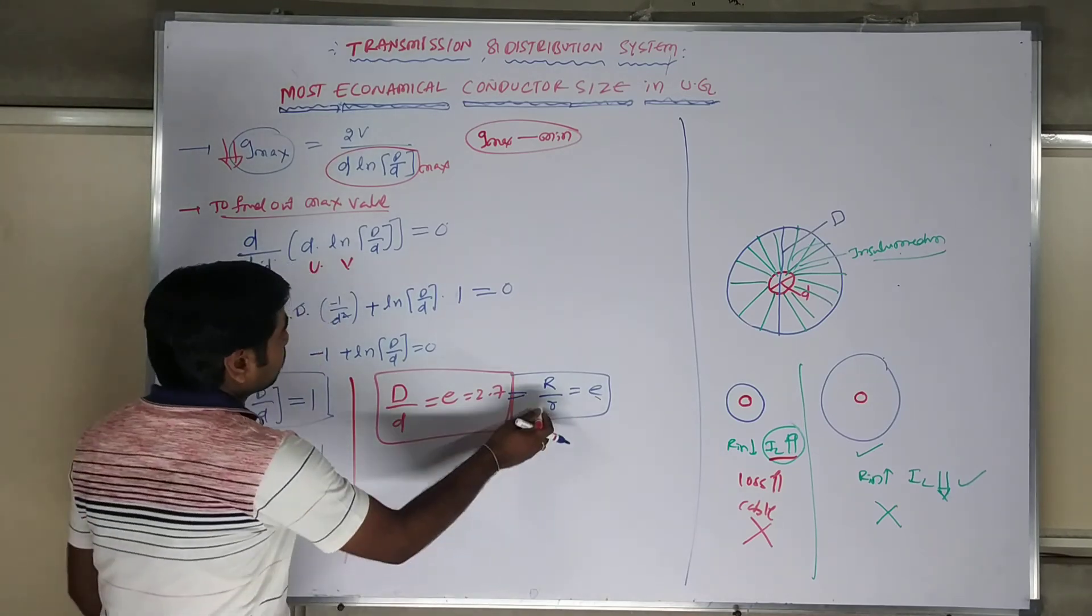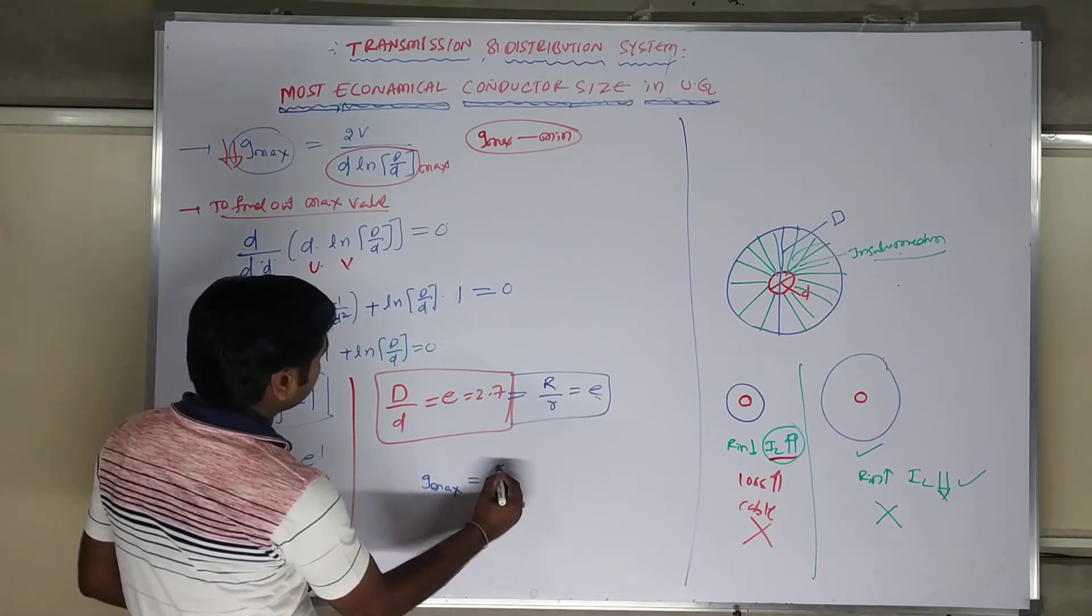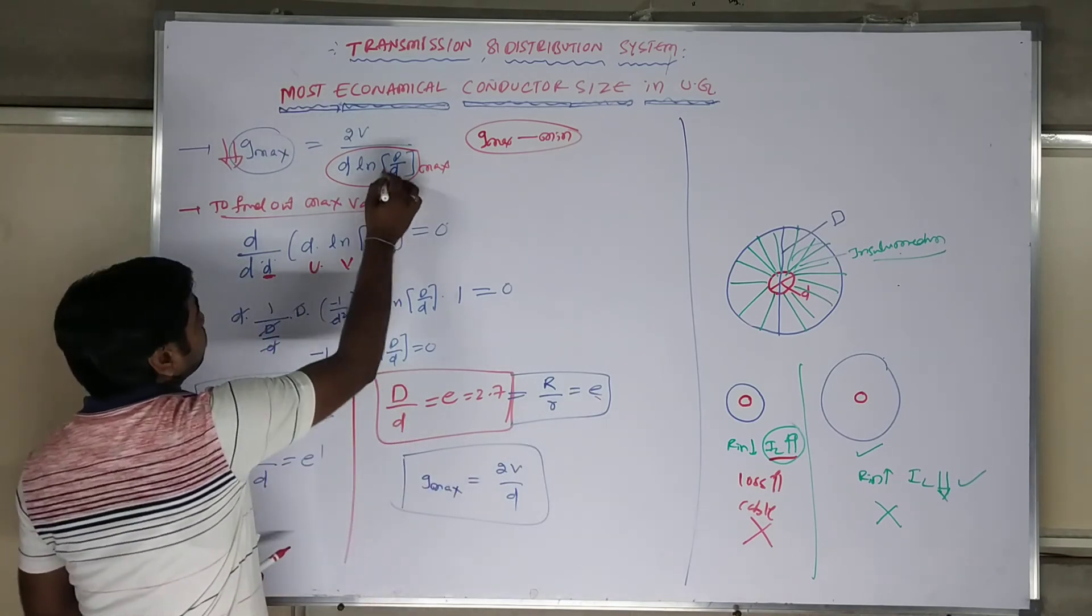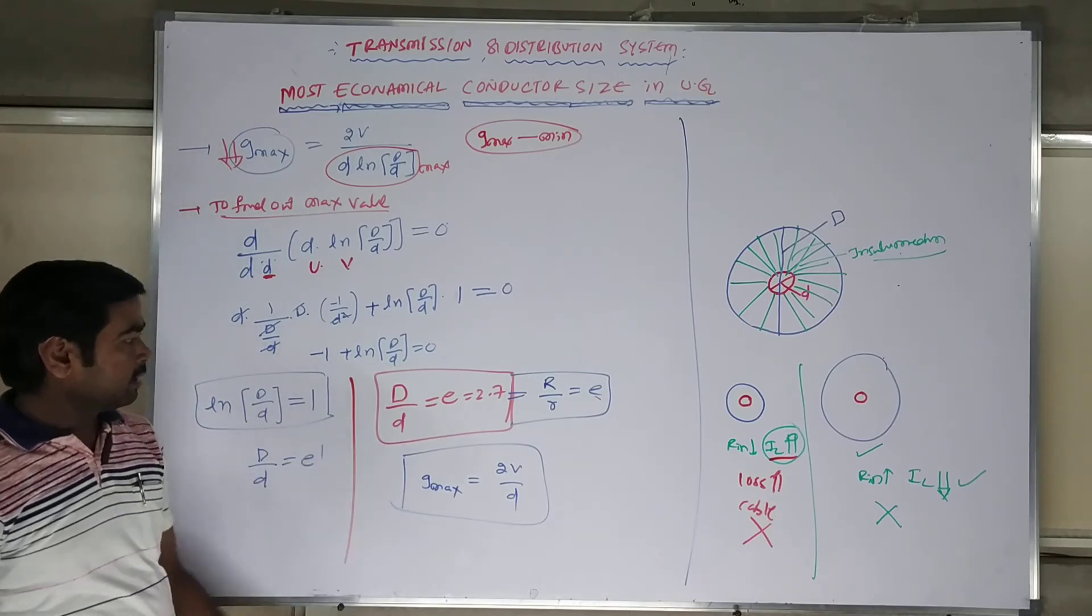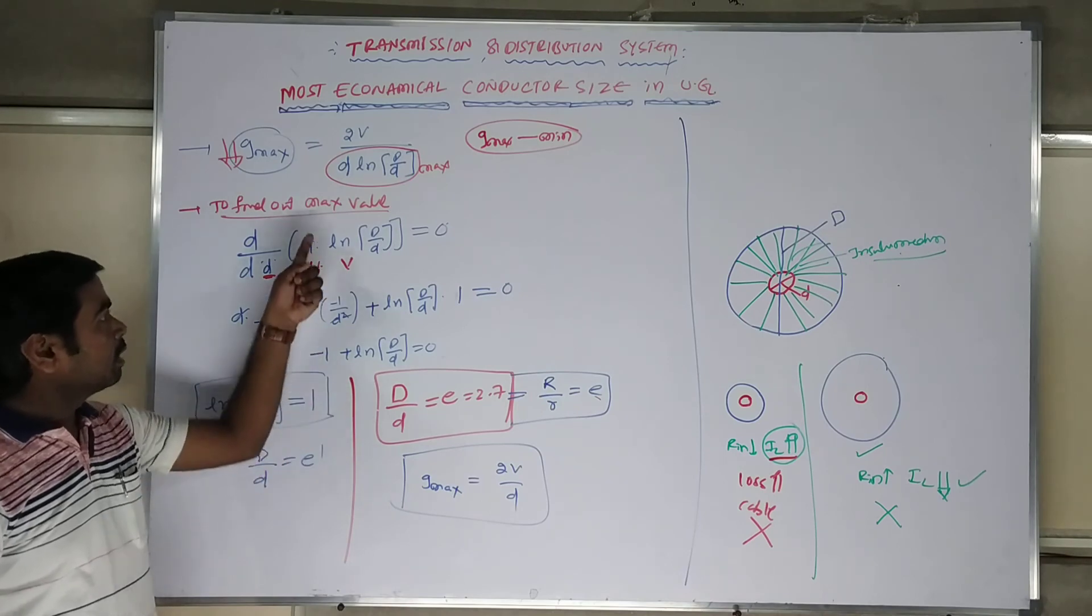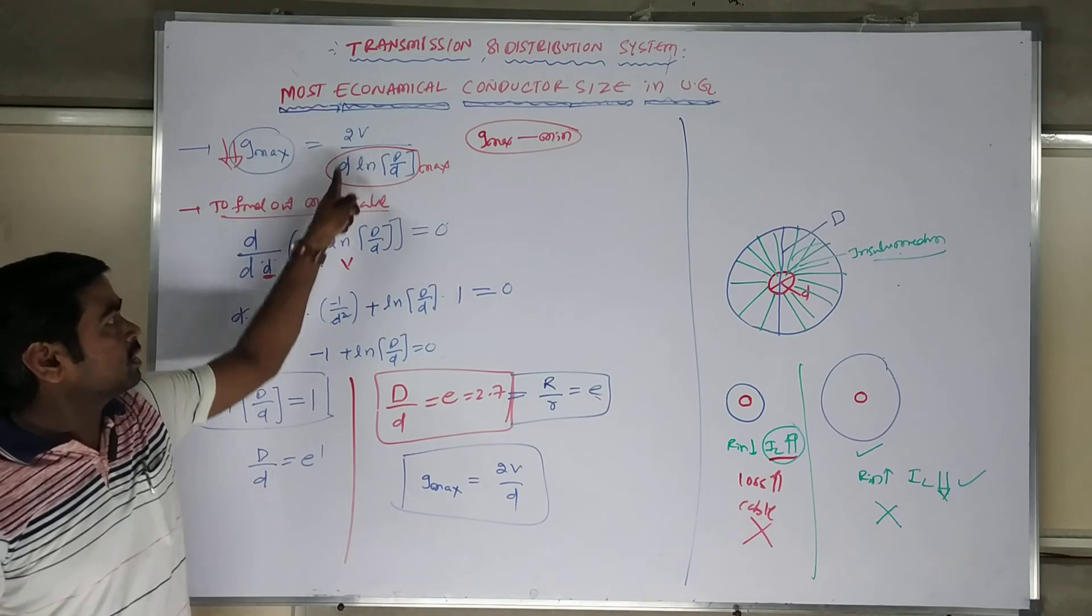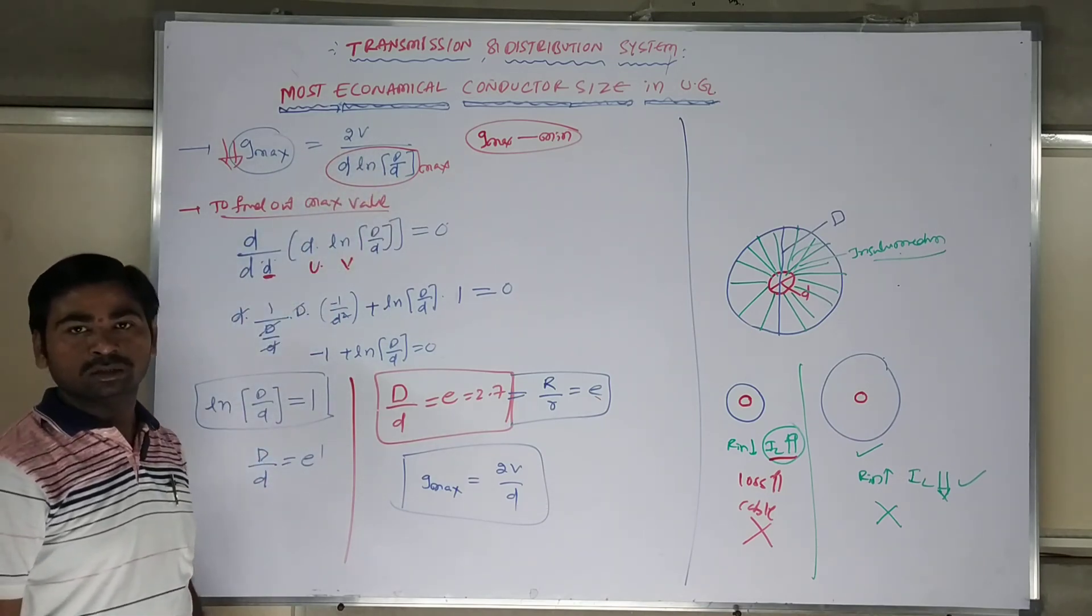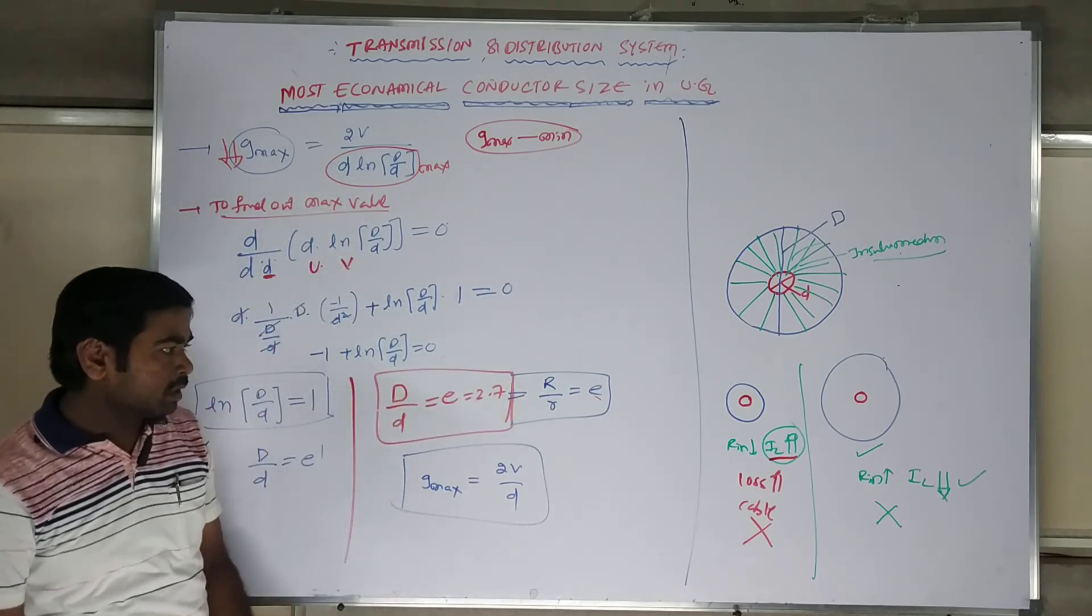So under this condition, what are the gmax values? The gmax is equal to 2V by small d. Because these two values will be going to cancellation. We are going to get this value. I hope you are very clear. This question will come in examination. Please remember how I did the derivation. At what condition gmax value should be minimum? For this, the denominator is going to be maximum. To calculating of most economical condition. The condition, in the last examination, what is the ratio and how to get that? I hope you are very clear.